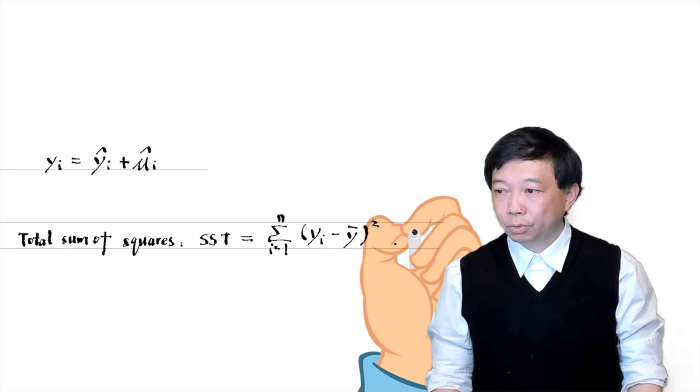yi minus y bar is the deviation in y. The sum of squared deviations in y is the total sum of squares, SST.